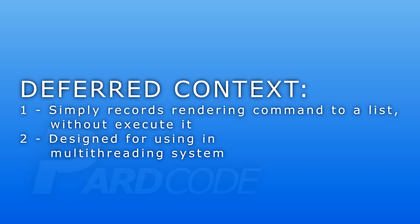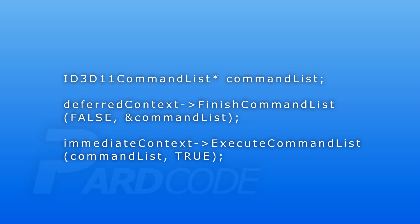The deferred context can be really useful to exploit the multi-threading system and the simultaneous generation of rendering commands. We can have zero or more deferred contexts. At the end, we have to use the immediate context to effectively execute the command list generated by the various deferred contexts. In this tutorial, we will see only the immediate context.